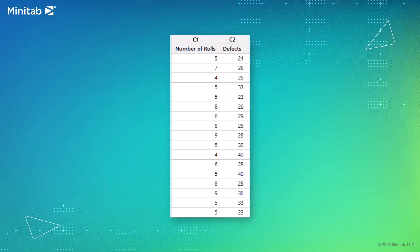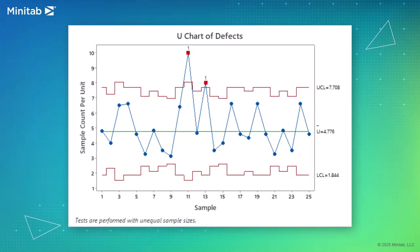For example, suppose the quality engineer samples individual rolls of wallpaper and the number of rolls varies per subgroup. In this case, use the U-chart.